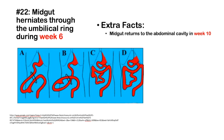Number 22: The midgut herniates through the umbilical ring during week six. It returns back into the abdominal cavity in week 10. While outside the abdominal cavity, it undergoes a 270-degree rotation to properly position the small intestine and large intestine. It's most important to know the timeline: week six and week 10.